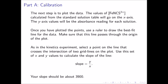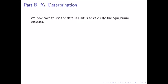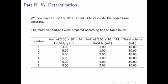Your slope should be approximately 3,900. We can now move to Part B, the determination of the Kc value. Recall that we built six additional solutions of differing concentrations and read these absorbances in order to determine the value of Kc.